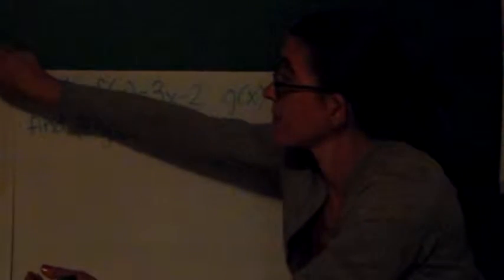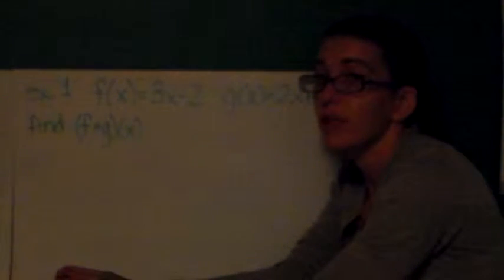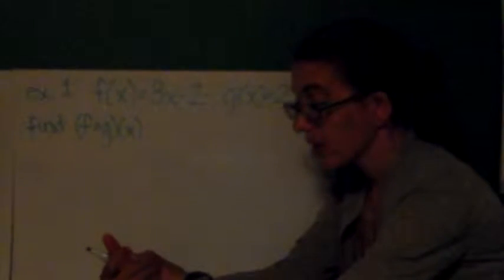Honestly, this is like the fancy way of doing some things that we've done before. So, here's our first example. f(x) = 3x - 2. g(x) = 2x + 5. Both of these functions have a domain of negative infinity to positive infinity. So, pretty easy to work with. I'm going to start by rewriting this statement, f of g of x, to use parentheses.